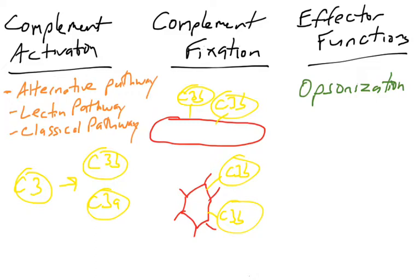So when you cover a pathogen with C3Bs, macrophages are really attracted to it and will eat it more likely than if it wasn't covered with complement. So that's called opsonization.